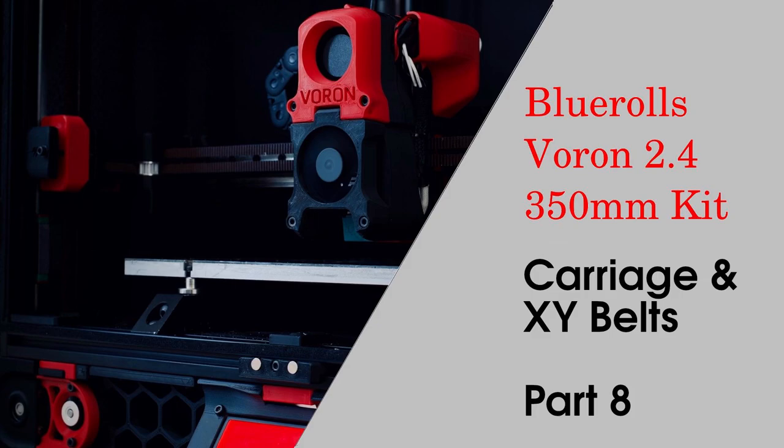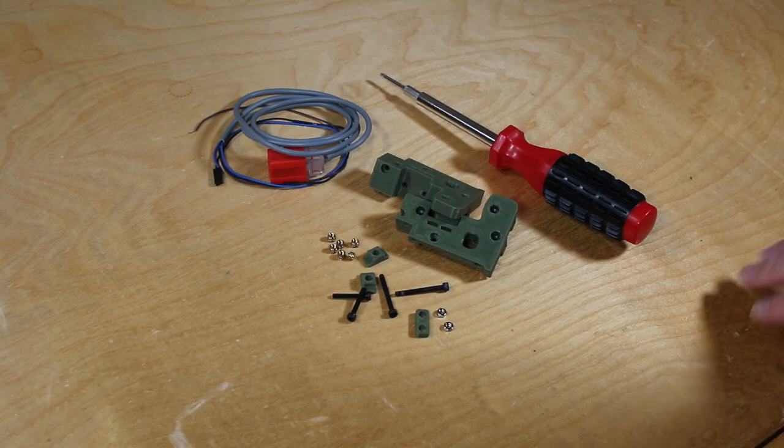Welcome to part 8, where we complete the assembly of the carriage and the XY belts for our Voron 2.4.